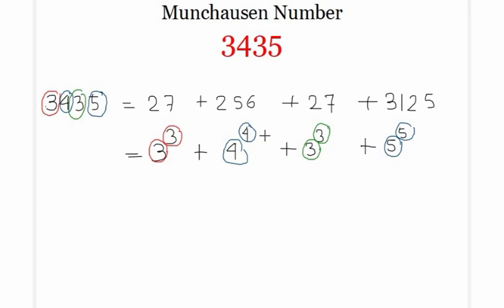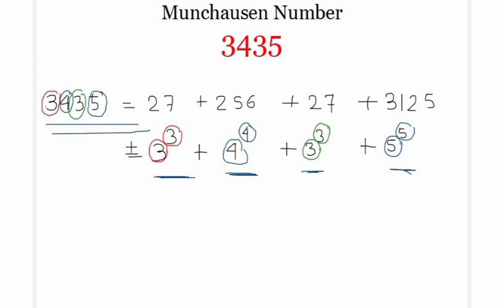So 3435 has a peculiar representation equal to 3³ + 4⁴ + 3³ + 5⁵. These types of numbers are known as Munchausen numbers. Formally, when each digit is raised to its own power and summed, we get the original number back. This Munchausen number is a perfect digit-to-digit invariant.